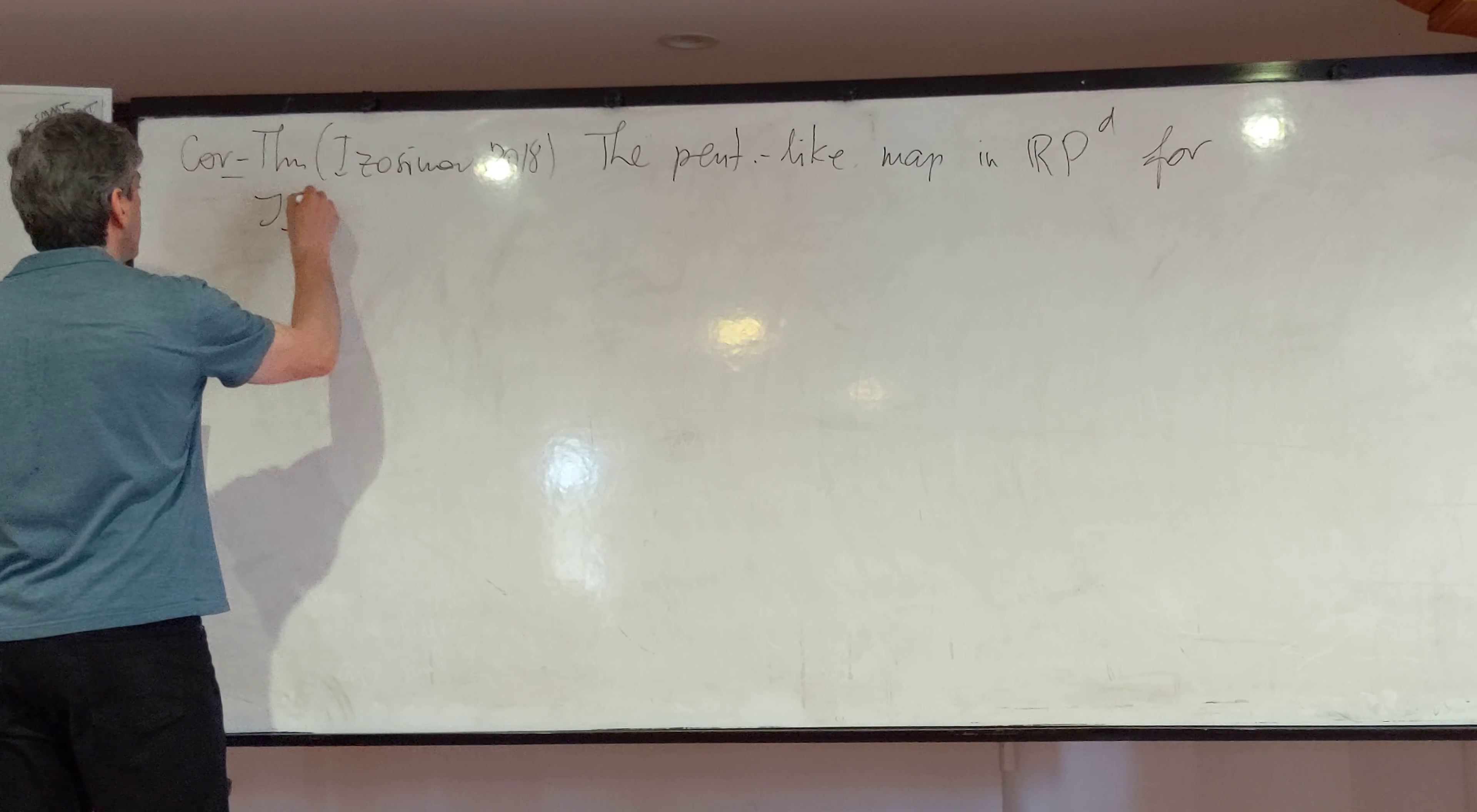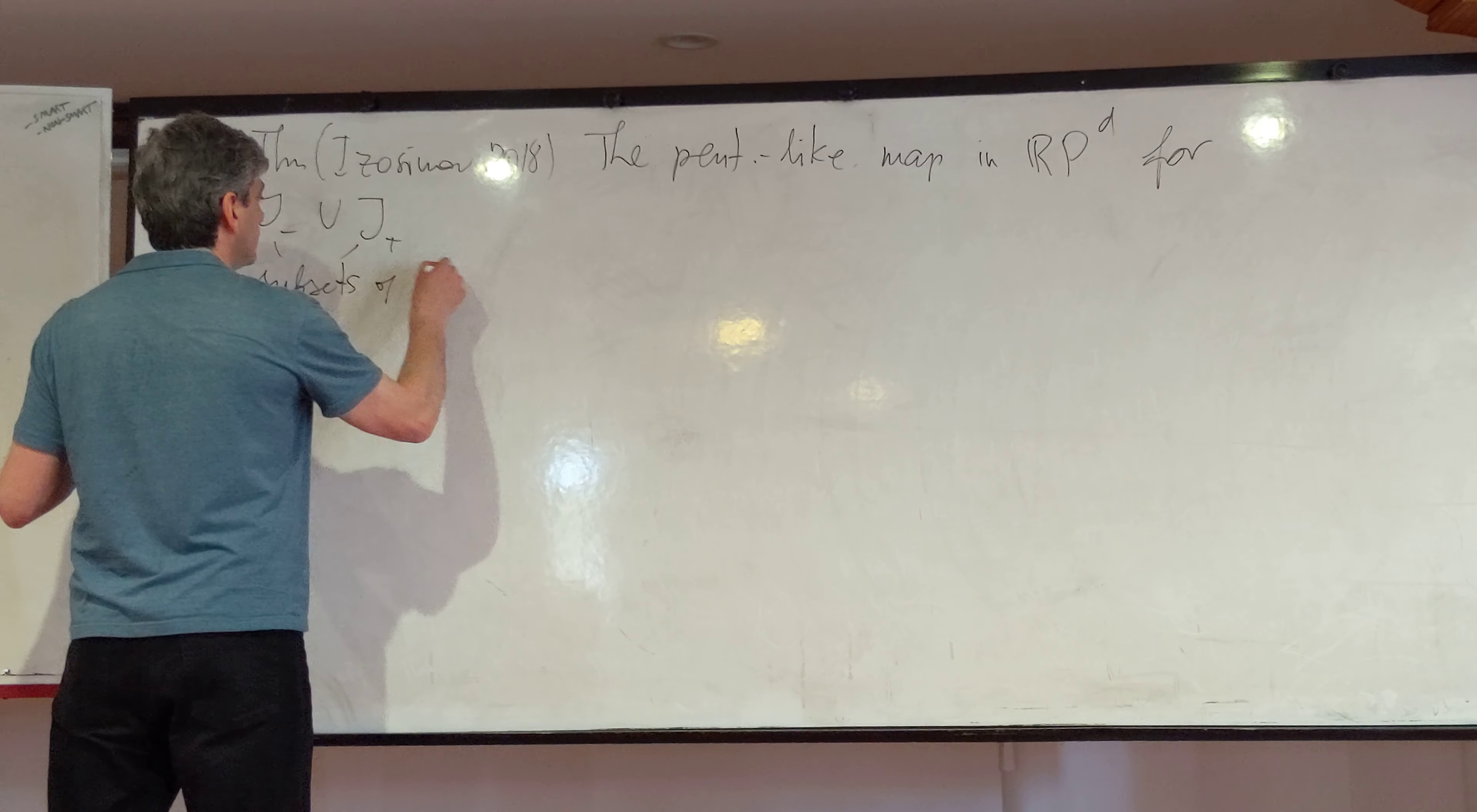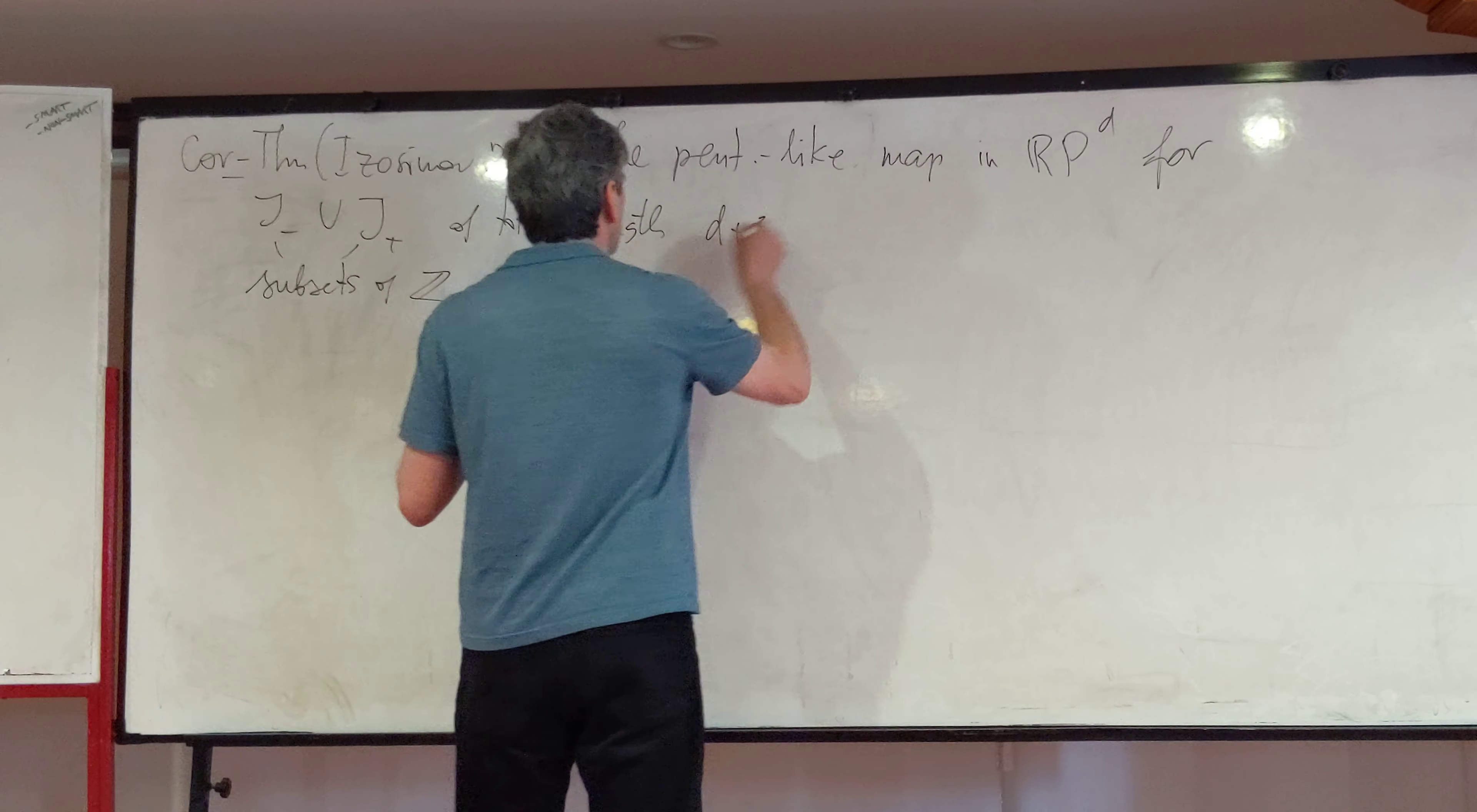J-plus and J-minus, so these are subsets of integers of total length, of total number of elements. So length here stands for the number of elements d plus two.